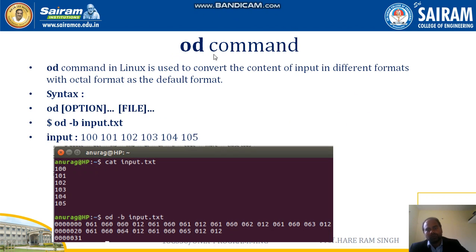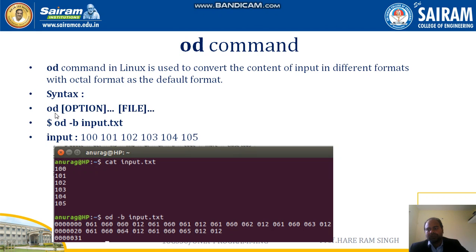The next command is od. The od command in Linux is used to convert the content of input into different formats, with octal as the default format. You can convert file contents into octal, hexadecimal, decimal, or binary format using od. The syntax is 'od [option] filename'.